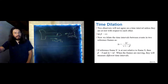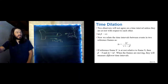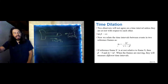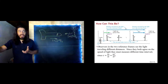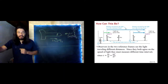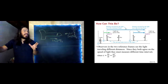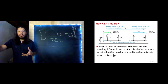We introduce notation: let beta equal v over C, where v describes the speed of one reference frame with respect to the other. Putting those together, we can relate the time interval in the primed reference frame to the time interval in the unprimed reference frame. These two time intervals have to be different — the speed of light is the same, but the light travels different distances, therefore there is a different time interval between two events according to different observers.